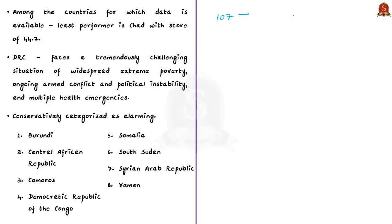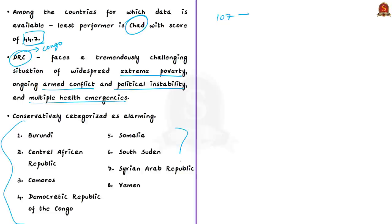Within the 107 countries, the least performer was Chad with a score of 44.7. The report states that the Democratic Republic of Congo faces a tremendously challenging situation of widespread extreme poverty, ongoing armed conflict, political instability, and multiple health emergencies. For countries with insufficient data, the report notes it is possible that with complete data, one or more of them would fall into the extremely alarming category, but without sufficient information to confirm this, they have been conservatively categorized as alarming.